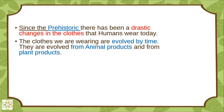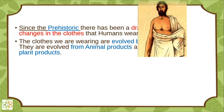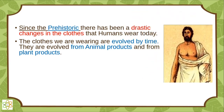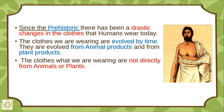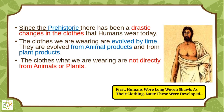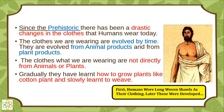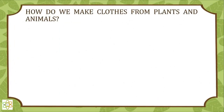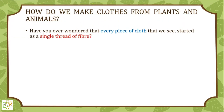Since prehistoric times there have been drastic changes in the clothes that humans wear today. The clothes we are wearing are evolved over time, from animal products and from plant products. Humans first wore long woven shawls as their clothing, later developing gradually, learning how to grow plants like cotton and slowly learning to weave.